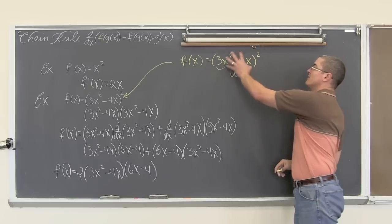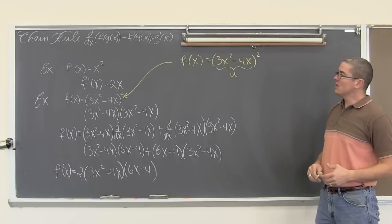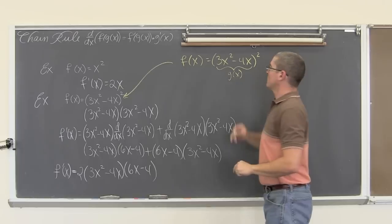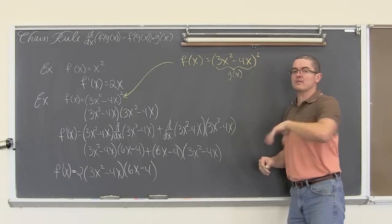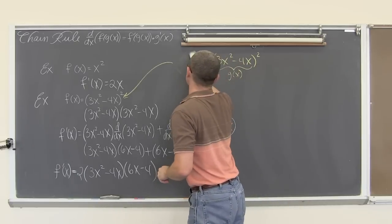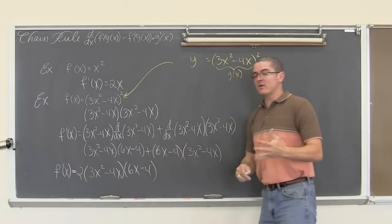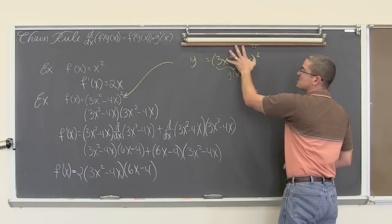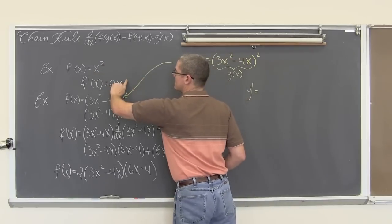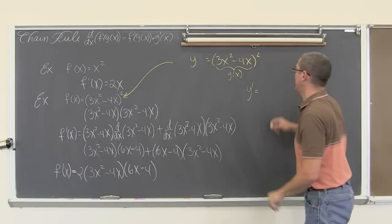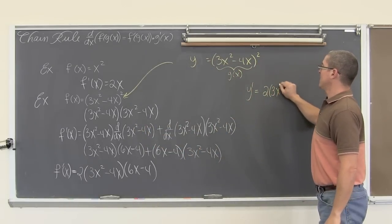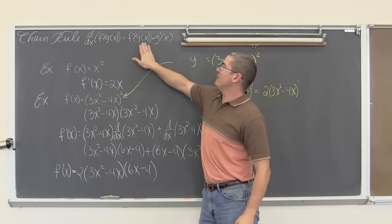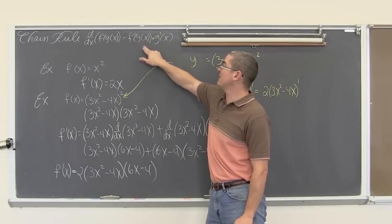That is the function inside the power of 2 function — this is my u, or my g of x. And the outside function is something squared — that is my f of x. So y prime is going to be equal to... I am going to use the power rule because this is something squared. I take the power of 2, drop it down out front, reduce the exponent by 1. So we are going to have 2 times (3x squared minus 4x) to the first power — that is the f prime of g of x. Now I am going to take the inside function out and find the derivative of that.